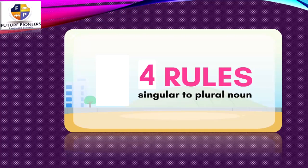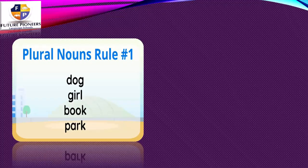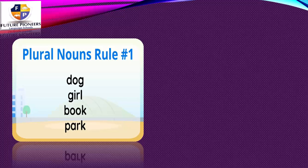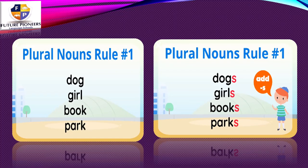How many rules do I have to turn any singular noun to a plural noun? Four rules. Let's know rule number one: add S to make a plural noun. It's a very easy rule. Now I have here dog, girl, book. These are singular nouns. How to turn just one dog, just one girl, just one book to be a plural noun? By adding S. Now they become dogs, girls, books — many dogs, many girls, many books. More than one.